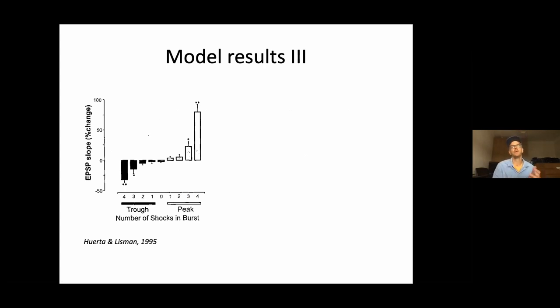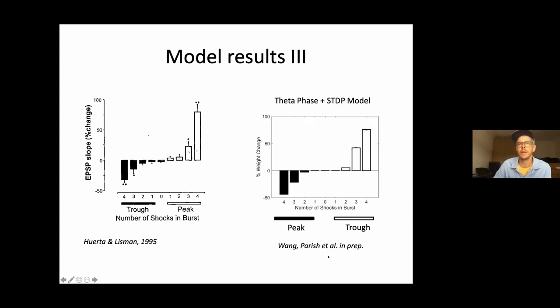So finally, we were also interested to see whether we can also replicate the initial findings by Huerta and Lisman that they found in the slice preparations in rodents. And to cut the long story short, we nicely replicate the findings. We get different outcome depending on whether we stimulate at the peak or at the trough. Meaning that we get LTD at the peak and LTP at the trough. And also the number of bursts very much modulates the degree to which long term potentiation, long term depression is happening.